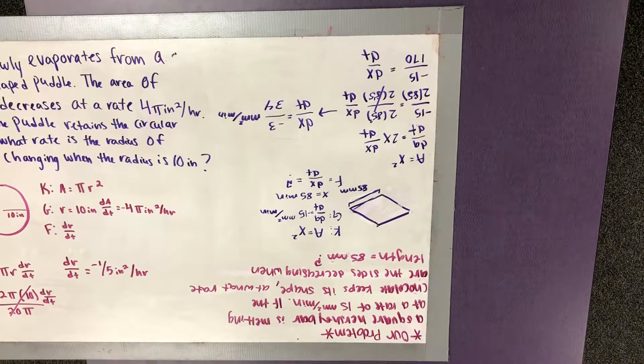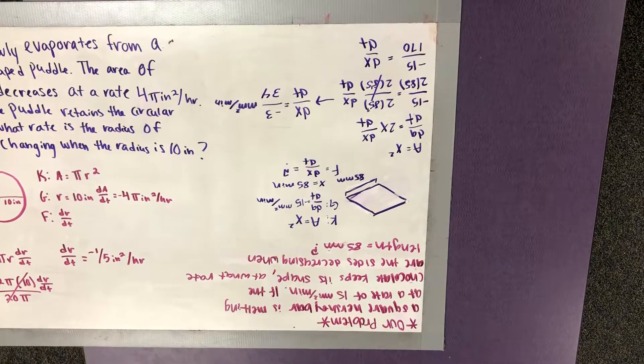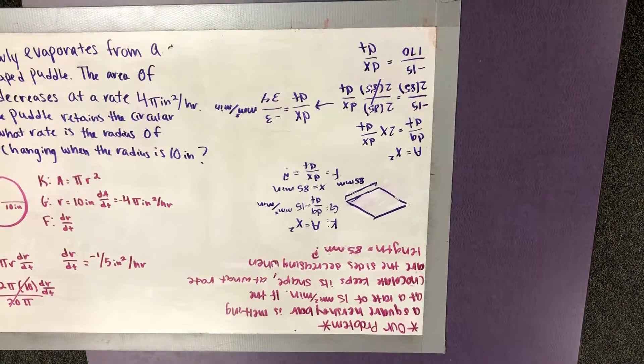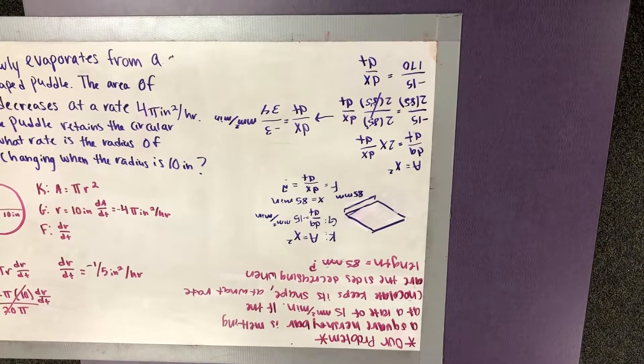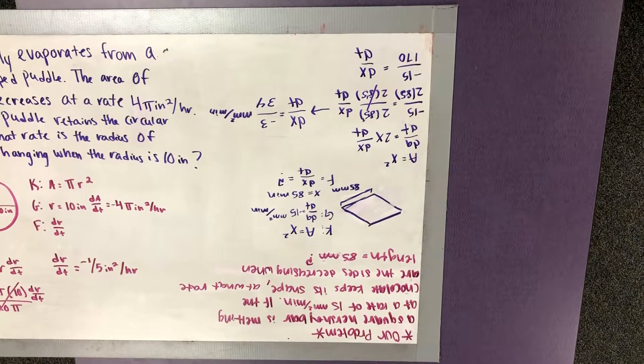So a square Hershey bar is melting at a rate of 15 millimeters squared per minute. If the chocolate keeps its shape, at what rate are the sides decreasing when the length is 85 millimeters?